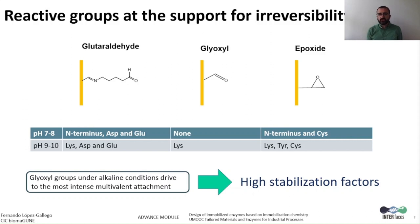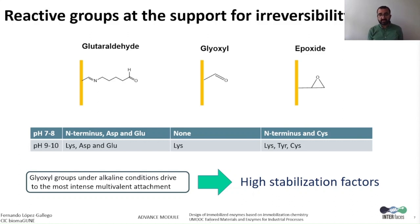Aldehyde groups can be short aliphatic aldehydes, named glyoxyl groups, and special types of aldehydes — glutaraldehyde — that present different features. Regarding the nucleophiles on enzyme surfaces, lysines are among the most abundant residues at the protein surface that can act as nucleophiles when they are deprotonated. However, the pKa is around 10 and requires alkaline conditions to efficiently interact with the carrier functionalized with these aldehydes or epoxy groups.